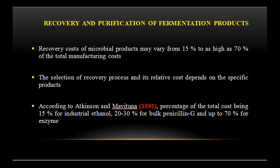According to Atkinson, the percentage of total cost is 15% for industrial ethanol, 20 to 30% for bulk penicillin G, and up to 70% for enzymes.